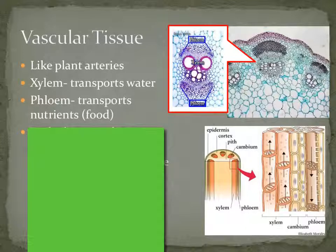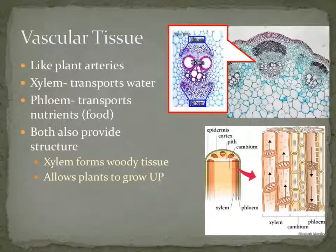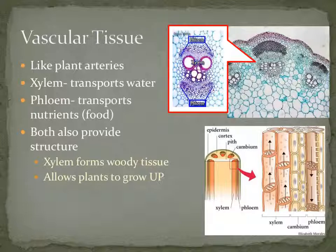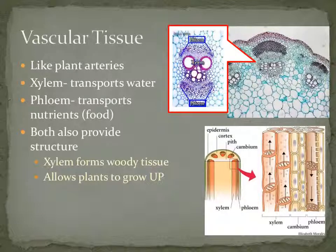Phloem — kind of a weird word — transports nutrients. I like to think of it as phloem transports food; that helps me remember it. In addition to transporting materials, both xylem and phloem also provide structure. Xylem, for example, forms the woody tissue of plants. So whenever you're chopping wood or stacking wood, that's the xylem — basically what mostly makes up a tree is the xylem.